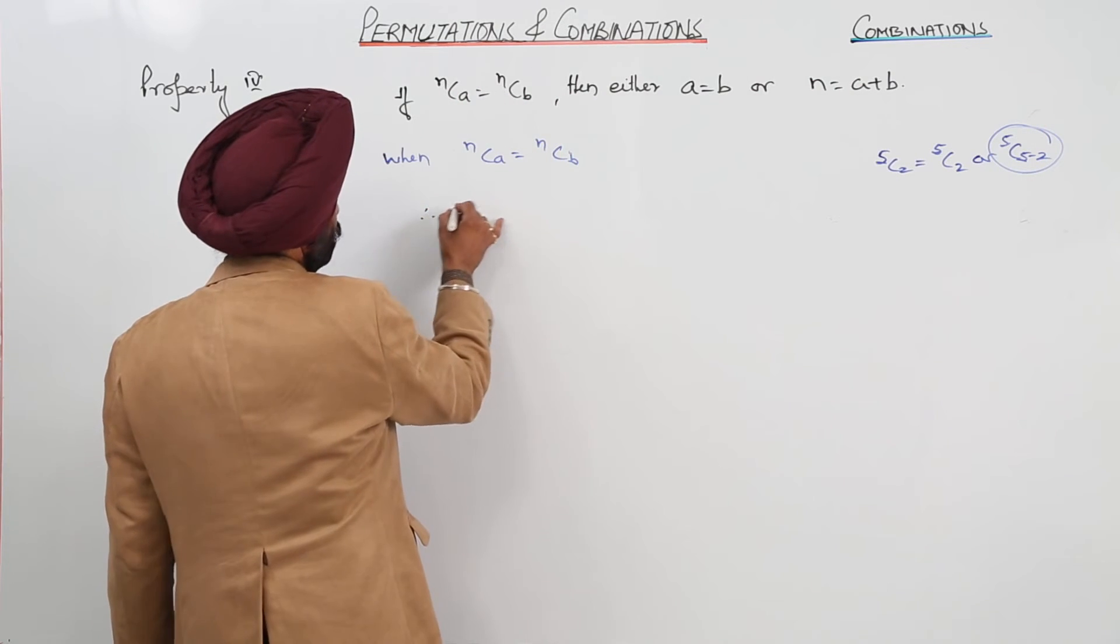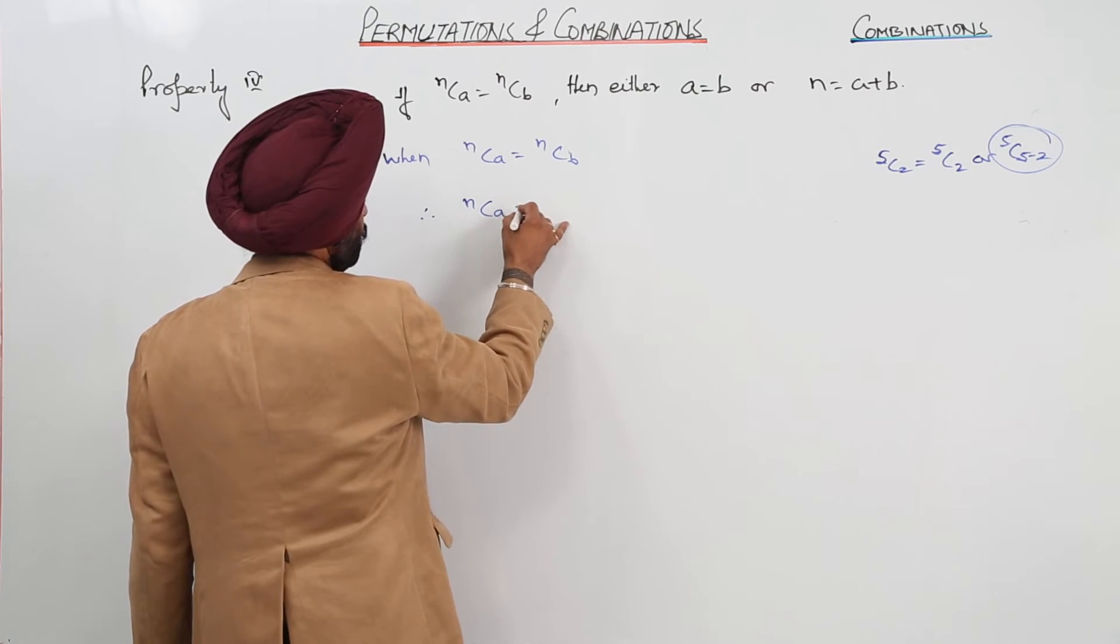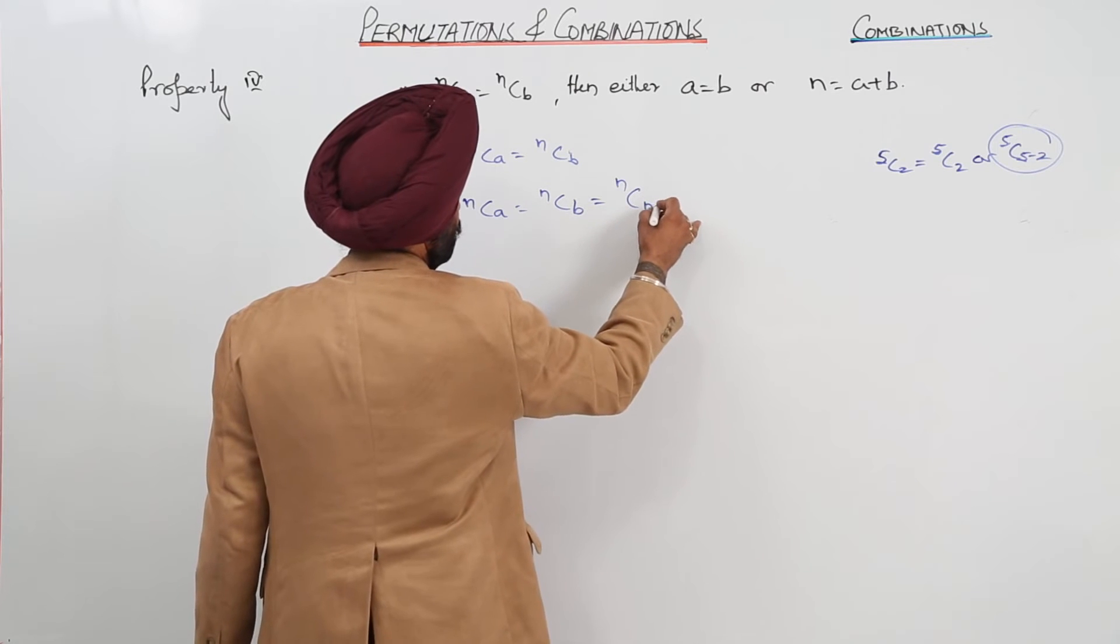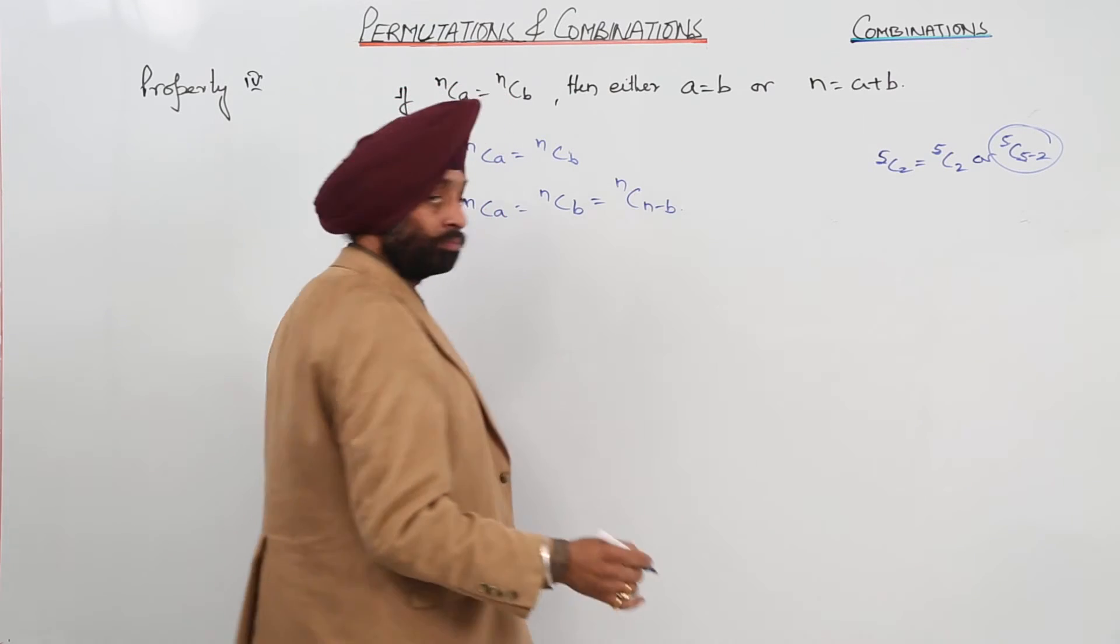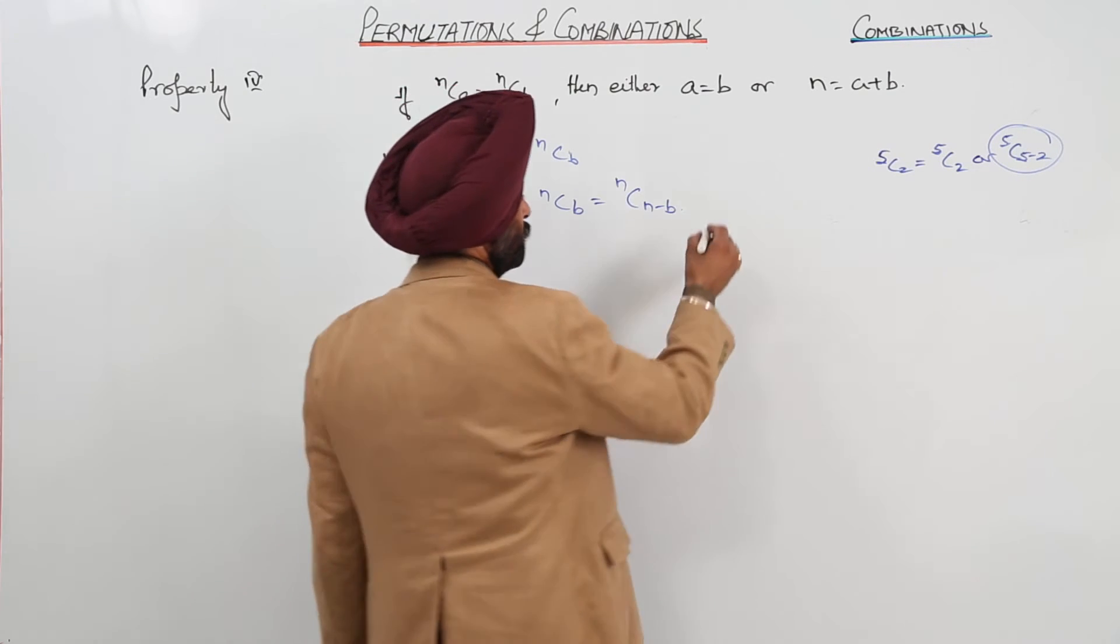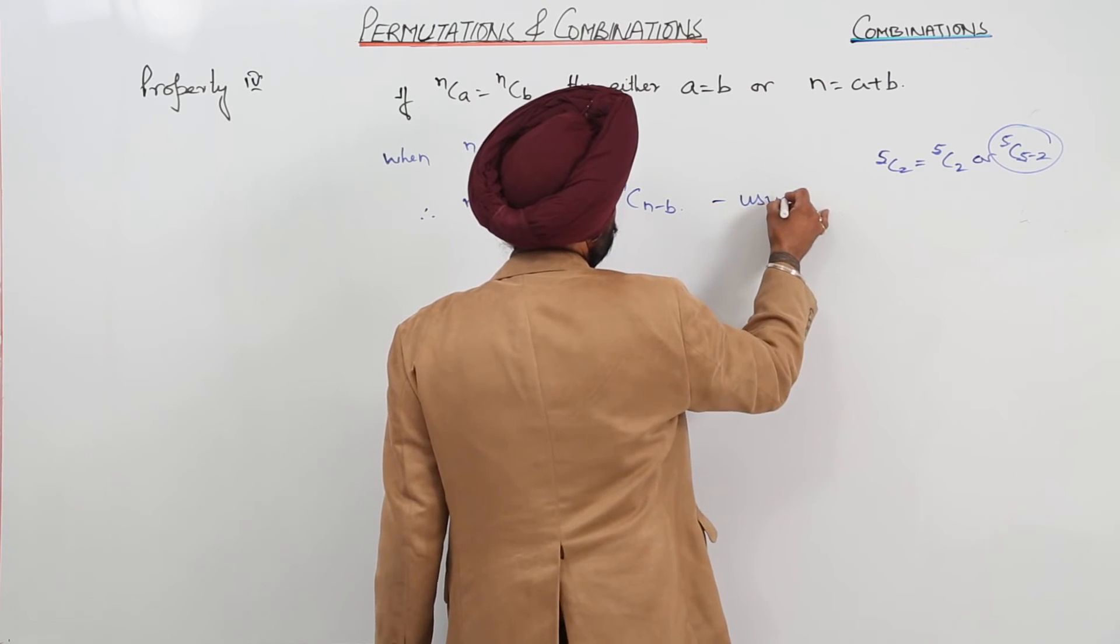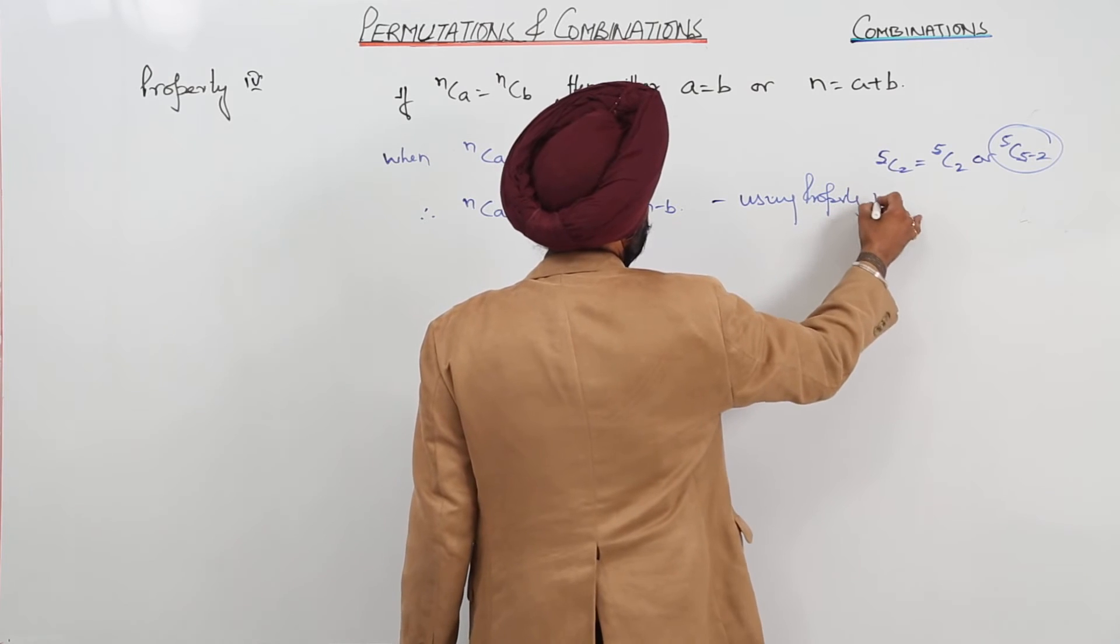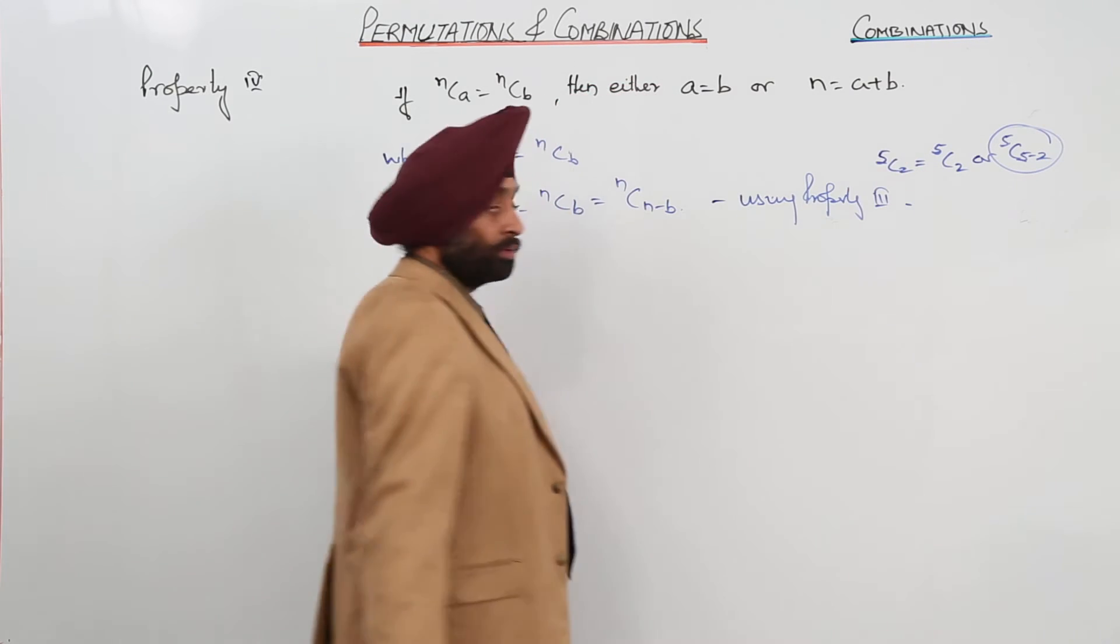Therefore, we can write it nCa is equal to nCb is equal to nCn-b. Using property 3. Is it clear?